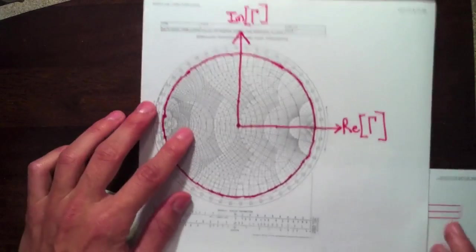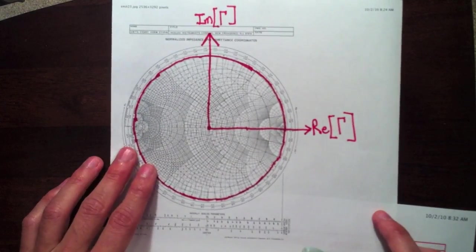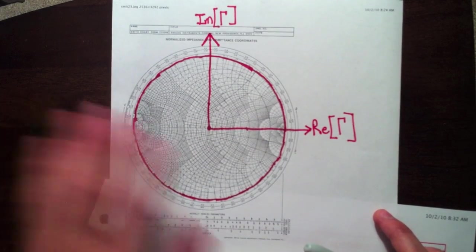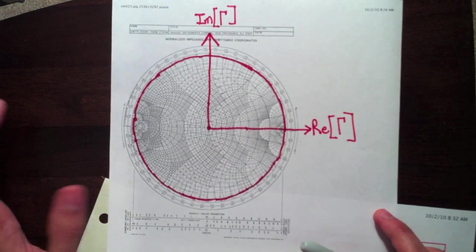So let's start by breaking down the Smith chart. So you see the complicated Smith chart in black behind it, but just ignore all that for a second. And let's just look at it very simply.